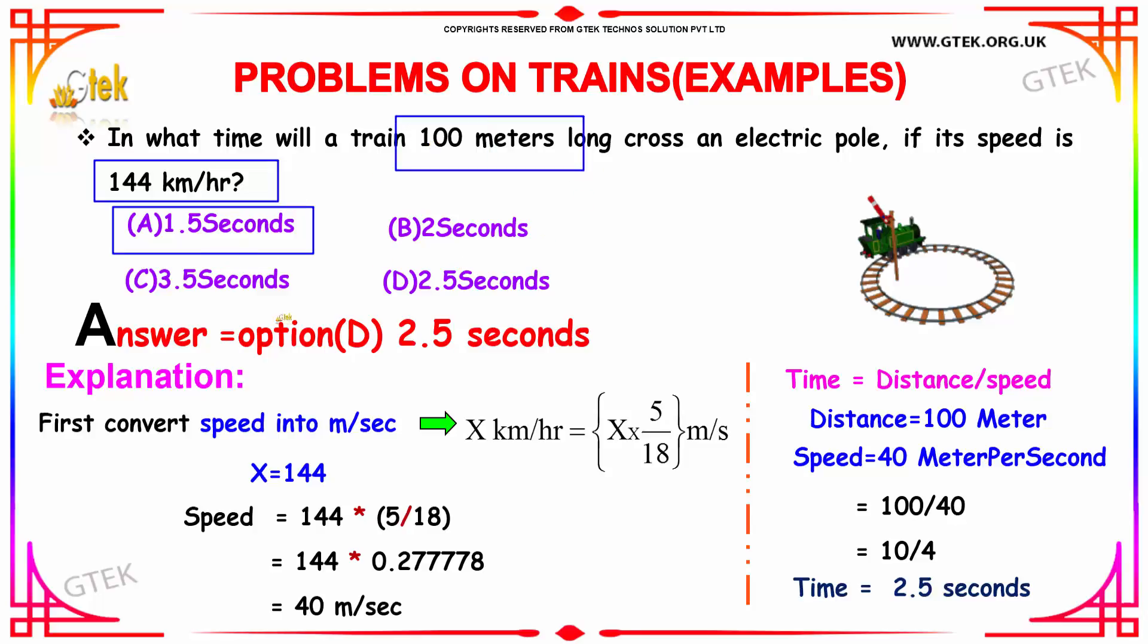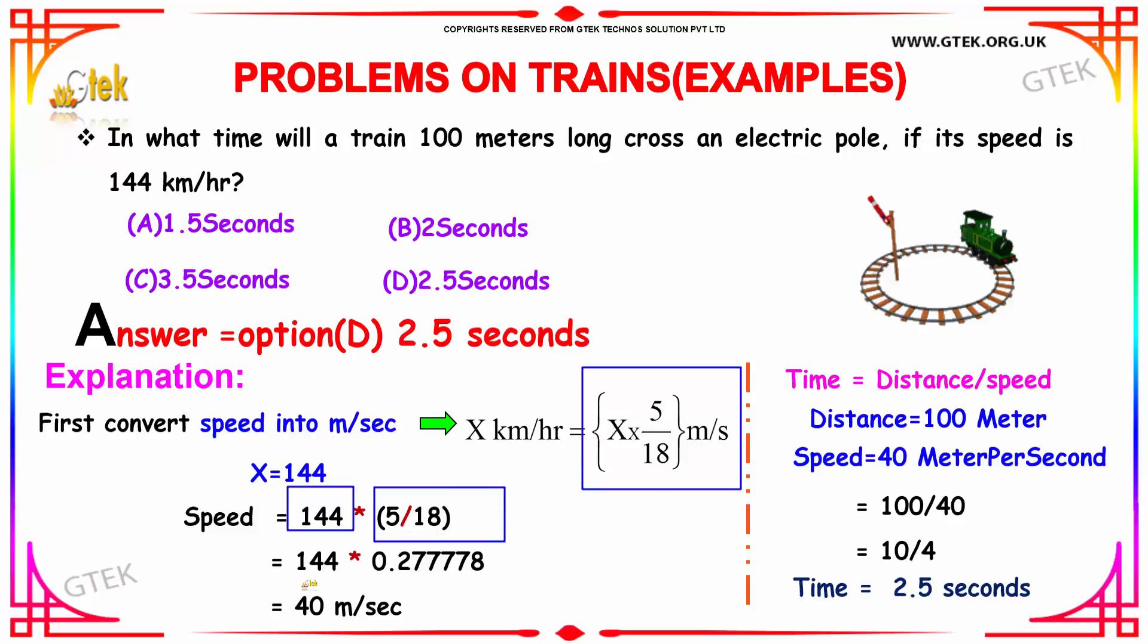So obviously, we need to convert your 144 kilometers per hour, your speed, into meters per second. So 144 into 5 divided by 18. Putting that, you got speed equal to 40 meters per second.